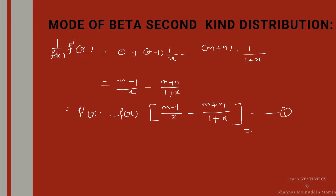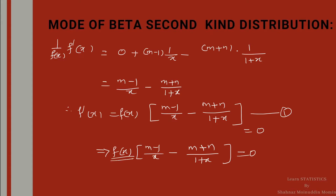Setting this equal to 0: since f(x) is not zero, we require (m-1)/x - (m+n)/(1+x) = 0.